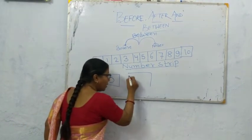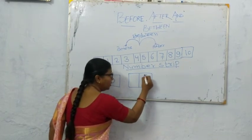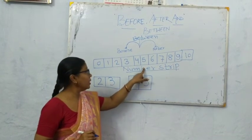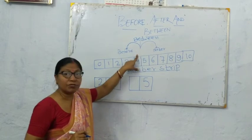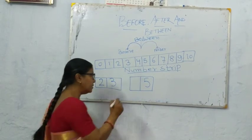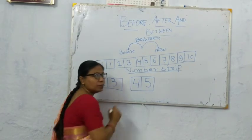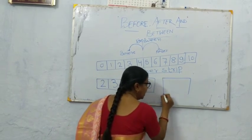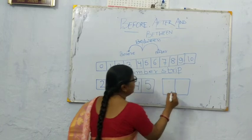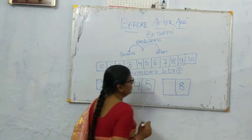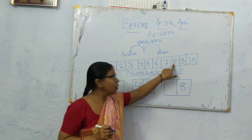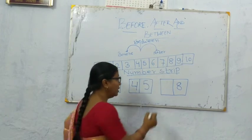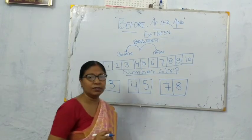Next example: 5. See the number string — which number comes to the left of 5? The answer is 4. Another example: 8. Which number comes left side of 8? The answer is 7.